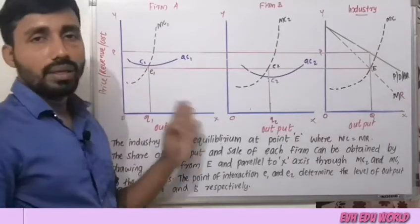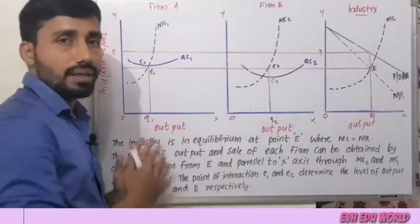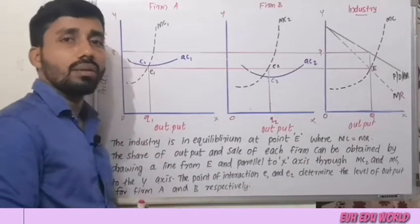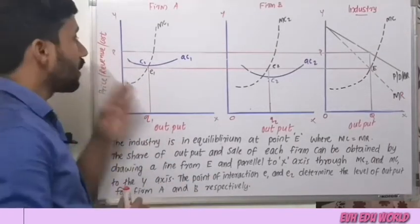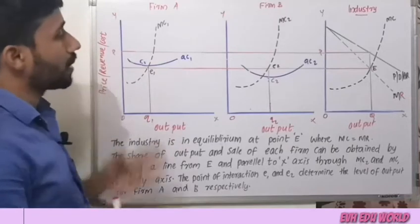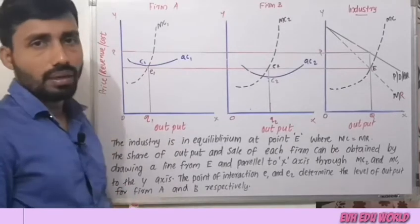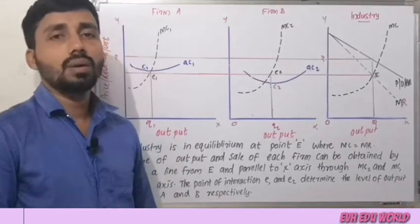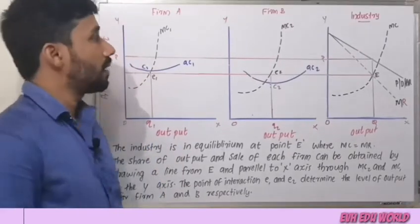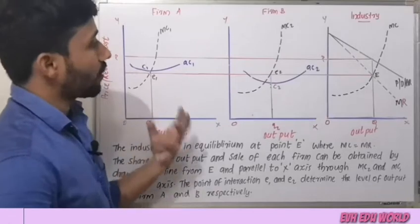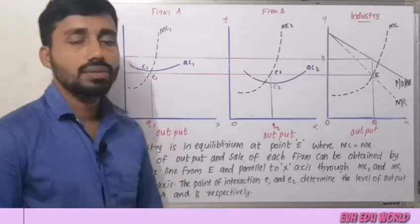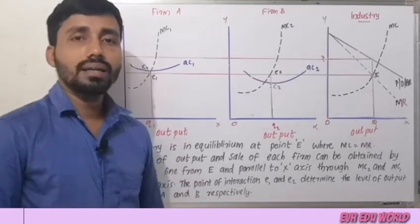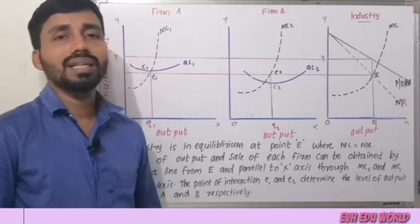We will mark the MC points from A to B on the MC curve and mark the equilibrium points, equilibrium quantity, and equilibrium price. In this case, there is a graphical representation of the structure of the market.